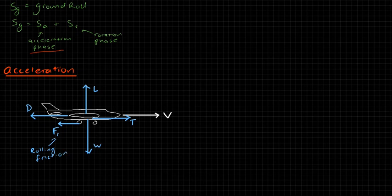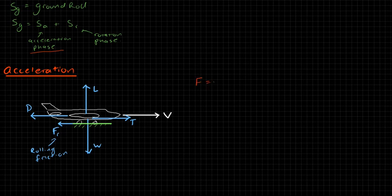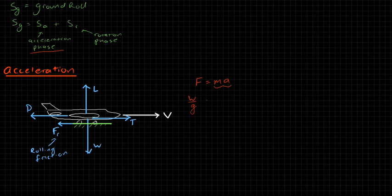The aircraft is on the ground. We do a force balance, remembering that we are in accelerating flight — accelerating forward. So we apply Newton's second law: force equals mass times acceleration. The mass of the aircraft is W over g, and the acceleration is the derivative of velocity with respect to time, dV/dt.